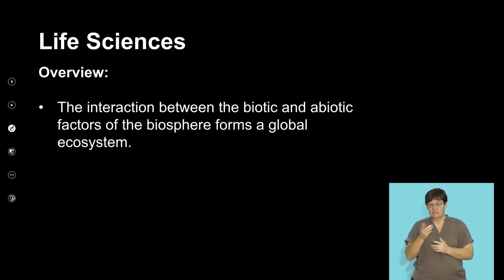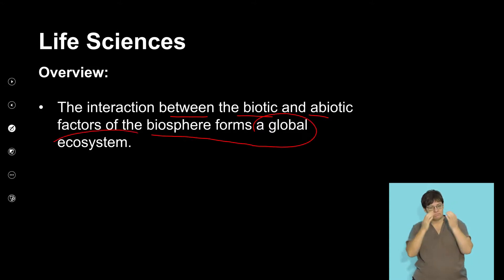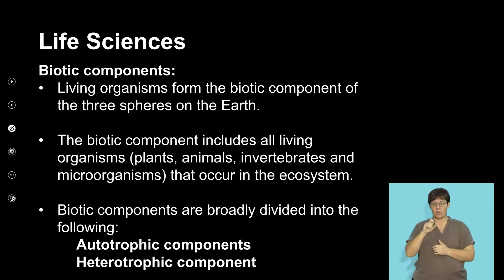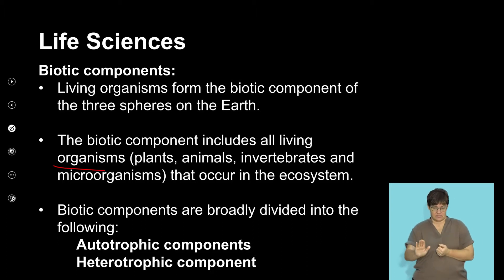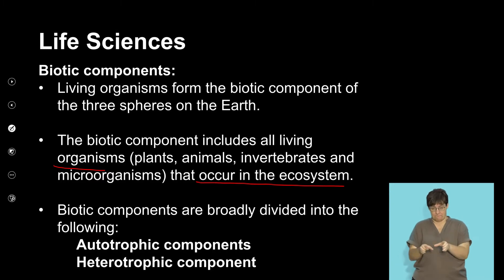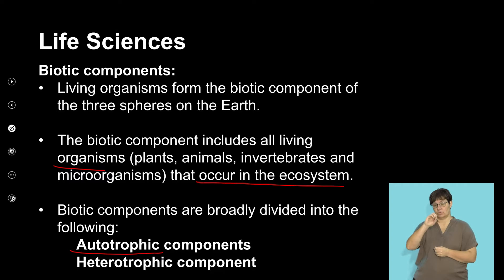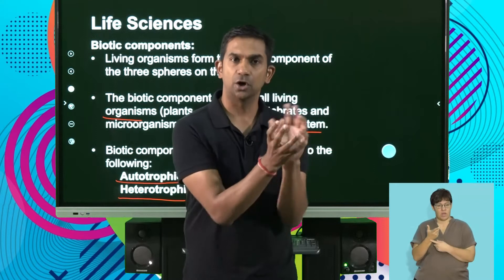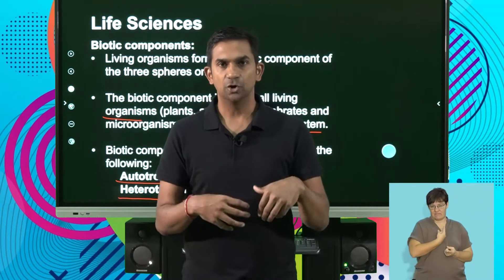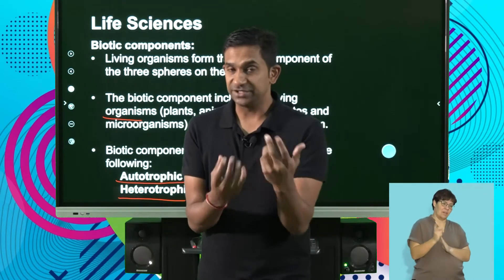The interaction between the abiotic and the biotic components is what forms a global ecosystem. When we talk of the biotic components, we're referring to all living organisms, and these are essentially broken up into two main categories: autotrophic components and heterotrophs. The concept of autotrophs comes from the word auto, meaning self, or be able to develop or derive themselves.